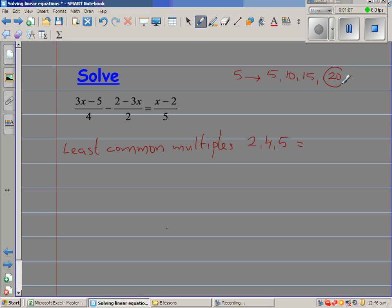So when you stop at 20 and think about 20, 2 goes in 20 ten times, 4 goes in 20 five times, and 5 goes in 20 four times. So the least common multiple is 20.